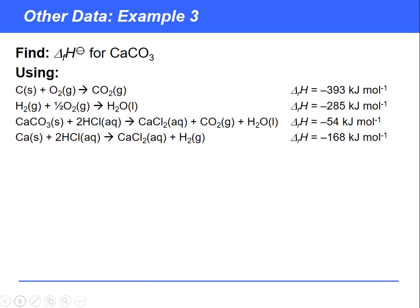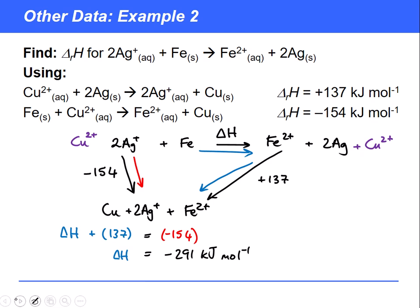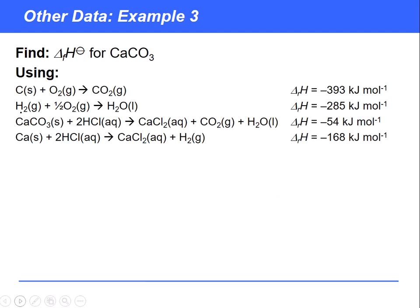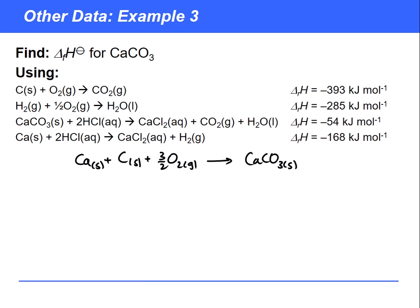One final example shows you can do this same procedure for more than a three-step cycle. All the examples so far have had three points to the cycle, but here we've got more equations and hence more points. We need to find the enthalpy of formation of calcium carbonate using various enthalpy changes. We start with solid calcium, carbon, and three-halves of O₂ gas, and that's going to form one mole of solid calcium carbonate.